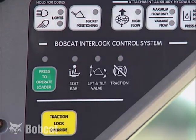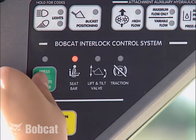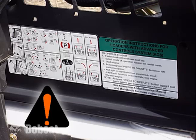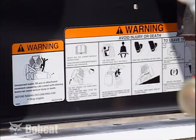Bobcat loaders have a control interlock system. The system should be inspected and maintained for proper function as required by the manufacturer. Take time to read the Bobcat Operator's Handbook and any safety signs or other instructional decals in the cab on other areas of the loader or the attachment. The safety signs are important and will help you avoid situations that could result in serious injury or death.